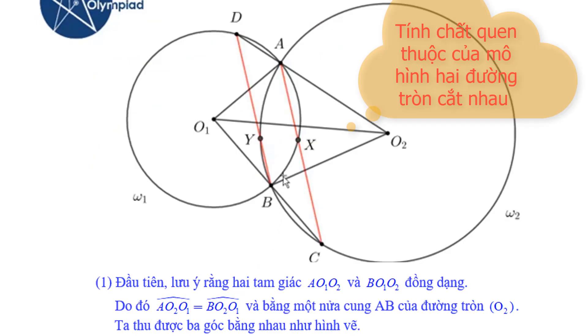First note that two triangles AO₁O₂ and BO₁O₂ are congruent. And so these two angles are equal and are equal to half of arc AB in the circle Omega 2. And so is this angle. So these three angles are equal.